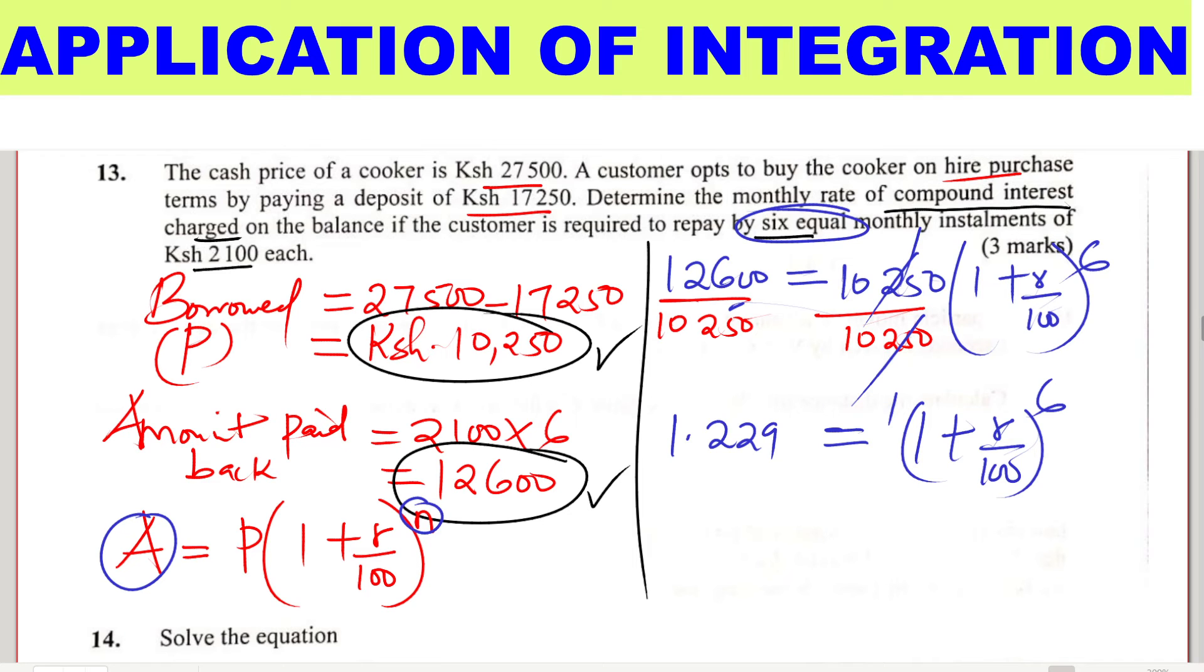To eliminate the power of 6, we take the sixth root of both sides. When we take the sixth root of 1.229, we get 1.035, correct to four significant figures. On the right side, we get 1 plus R over 100.